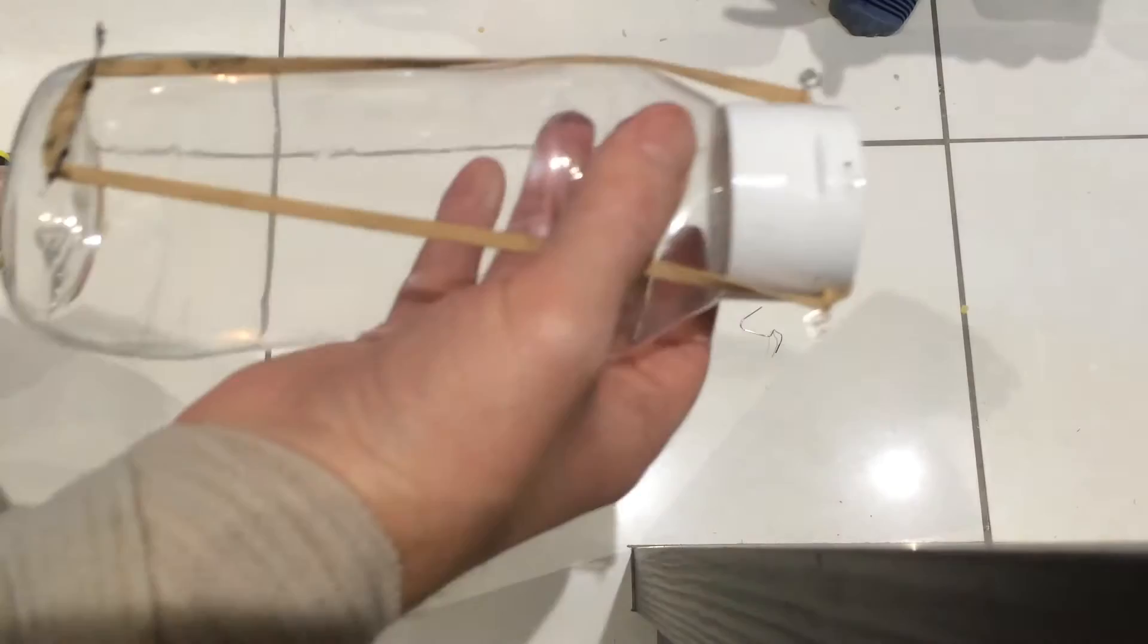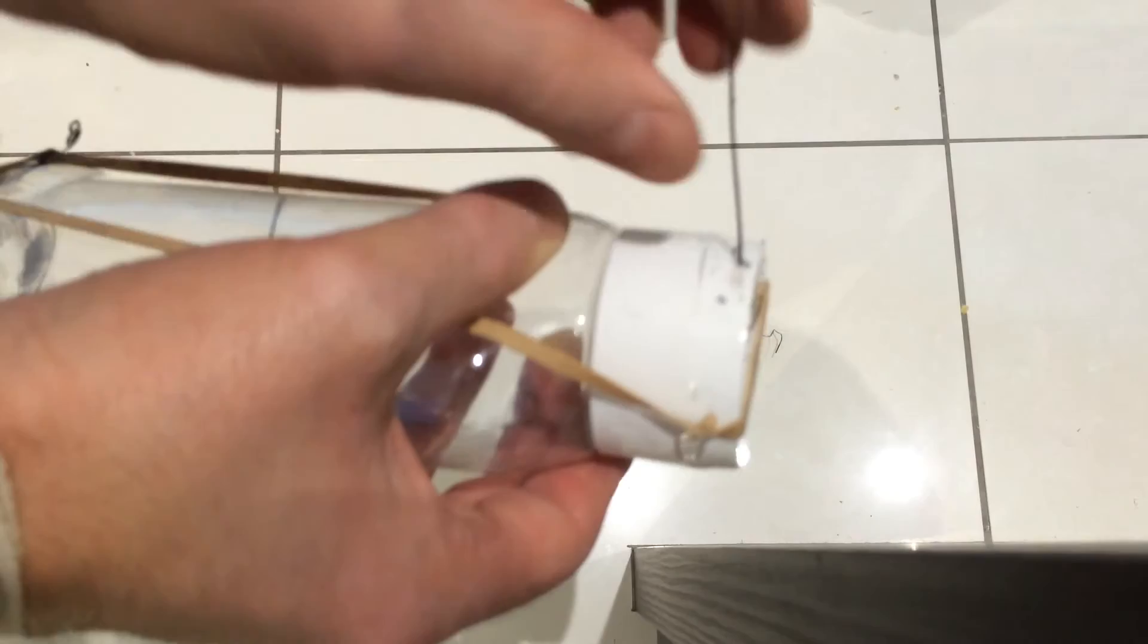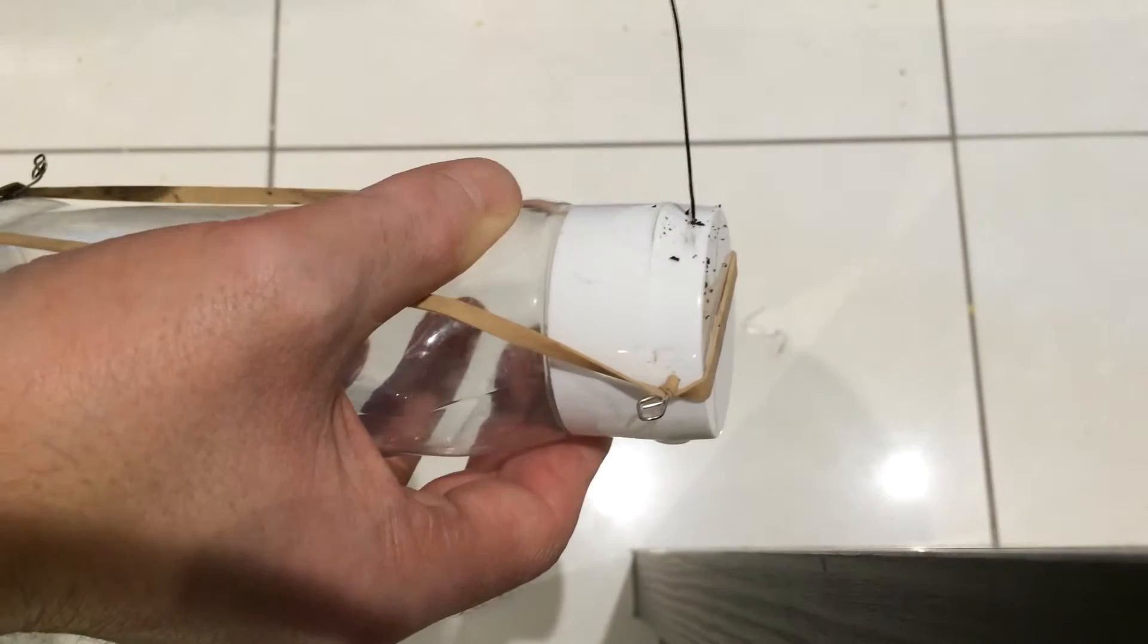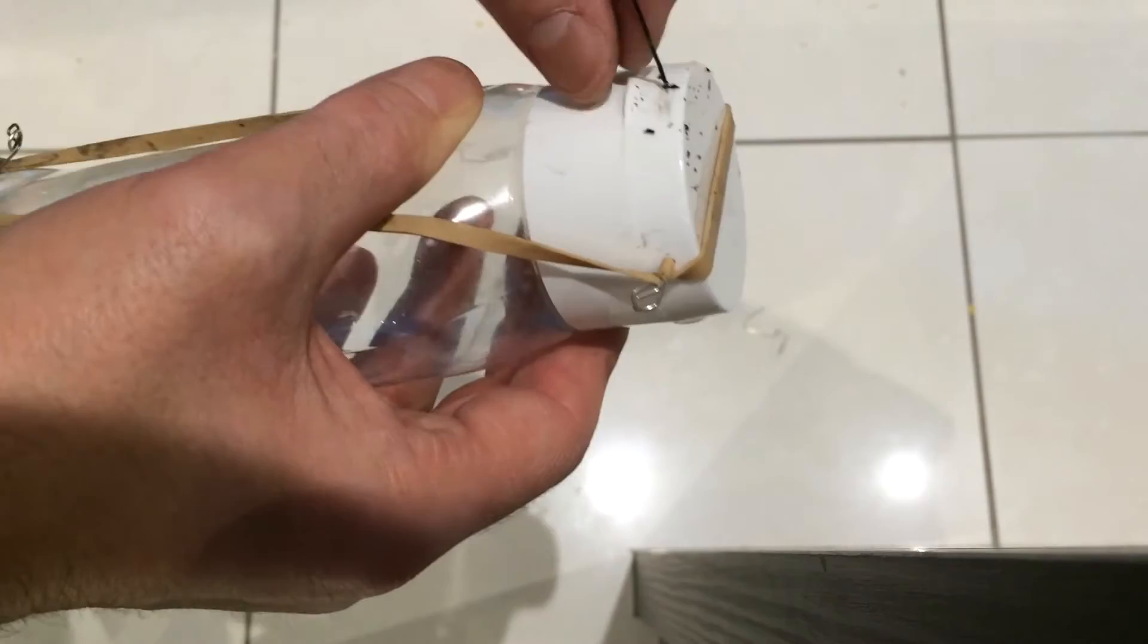So next step we put another wire in here. And in it goes. And we push it through the whole bottle. And we heat it up once more. So that we can attach something here. A mechanism that holds it open.